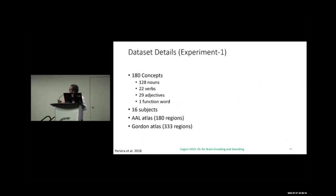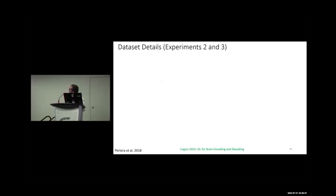For experiment one: 128 nouns, 22 verbs, 29 adjectives, and one function word, with 16 subjects. They mapped to two atlases — the HCP atlas with 180 regions and the Gordon atlas with 333 regions.